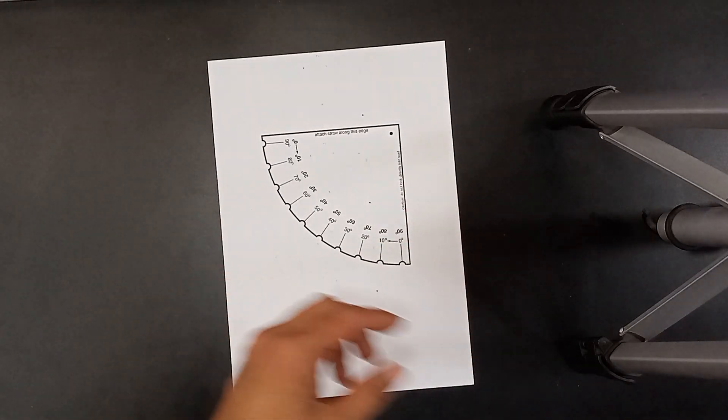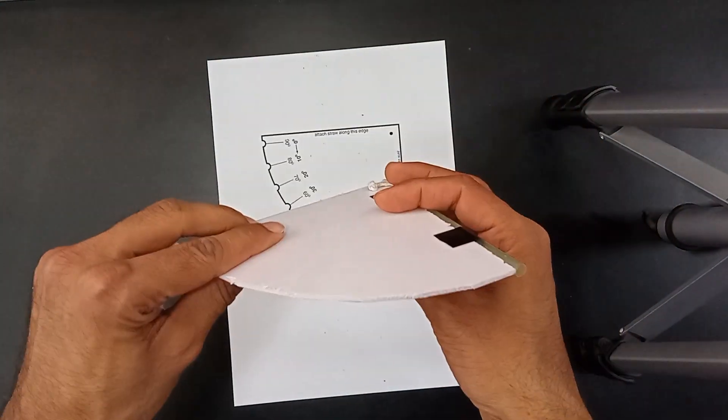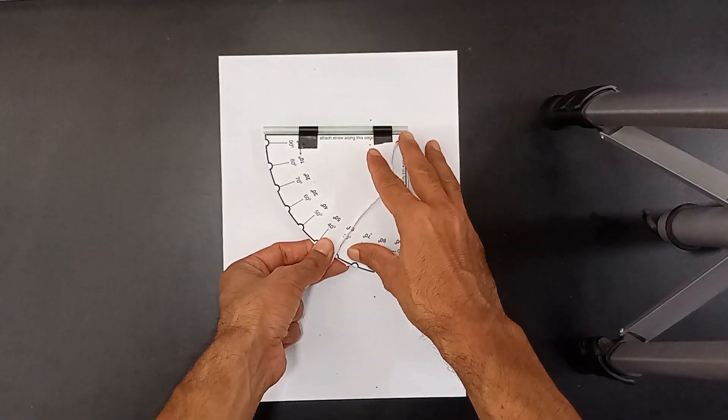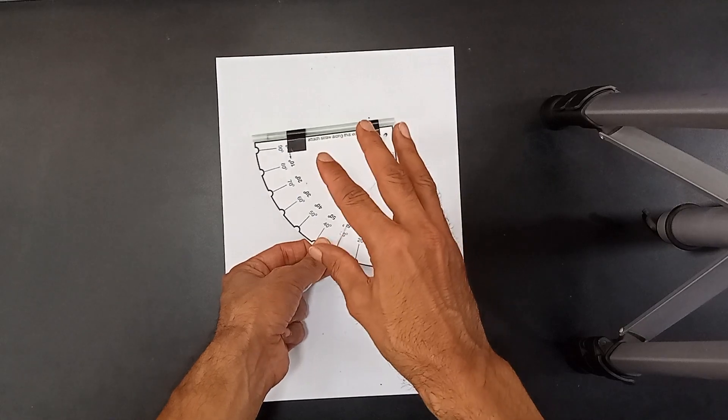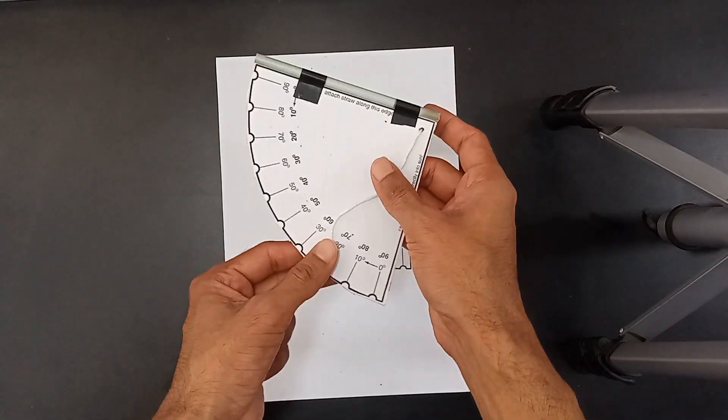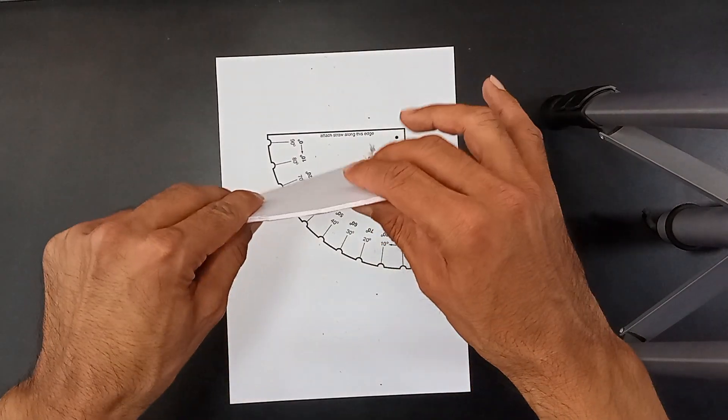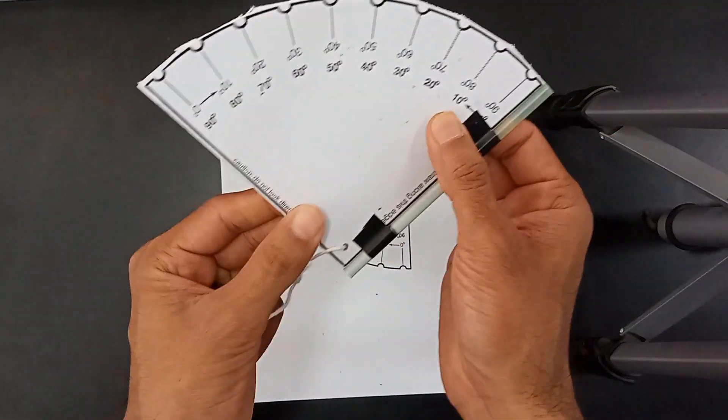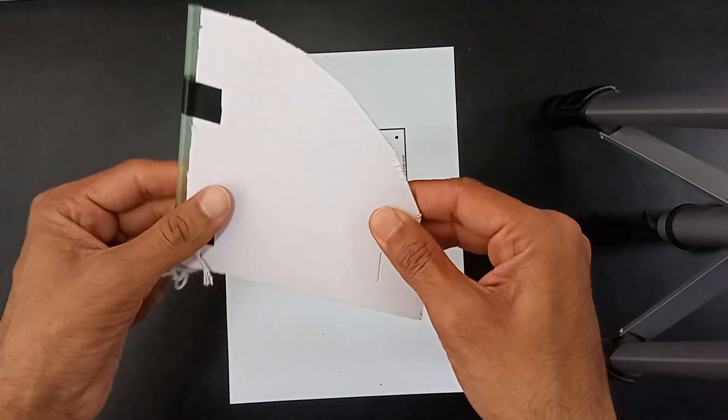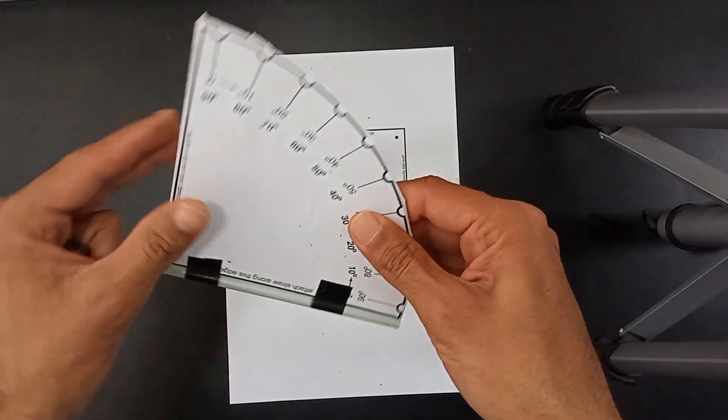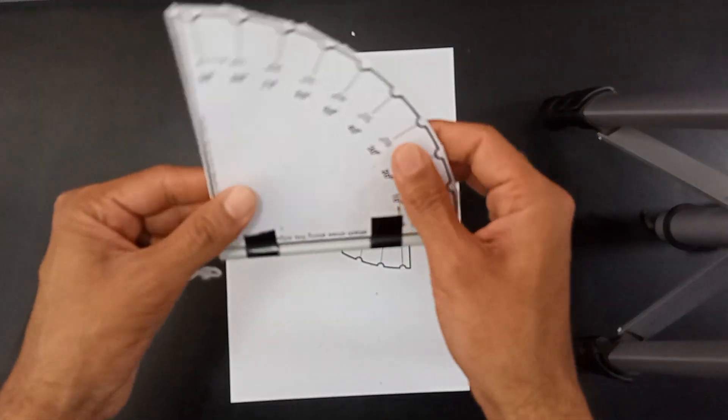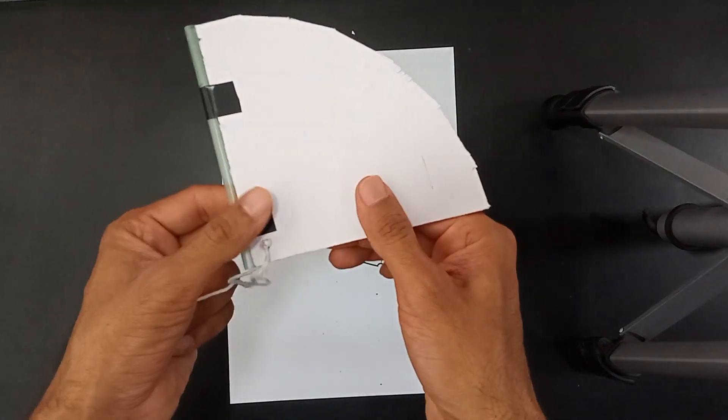What you will get at the end would look something like this. All I have done is taken this printout, pasted it on a hard surface and cut it out so that I have a sturdy looking, hard, durable astrolabe with me. Look how thick it is, how hard it is.